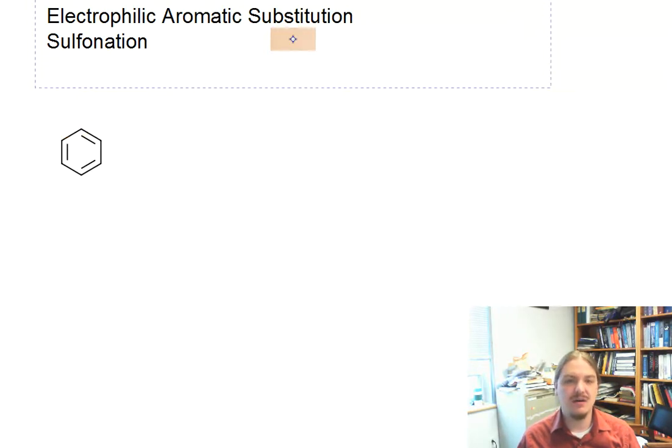Sulfonation of benzene is one of the types of electrophilic aromatic substitution and the reagent used is typically just concentrated sulfuric acid, though I'll talk about that in a moment.